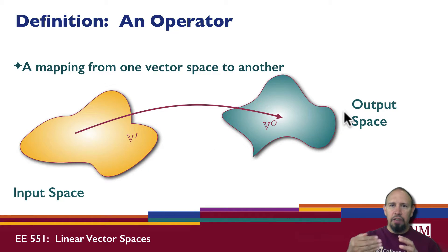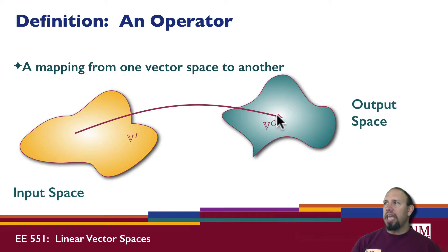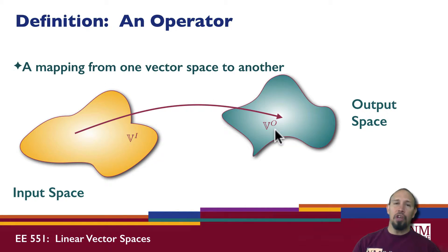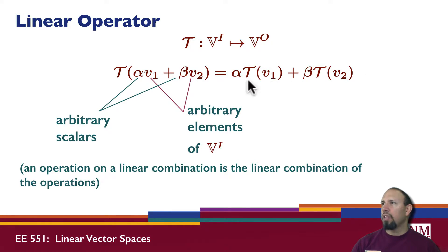If you think of a function, you have something going in and something coming out. What comes in is coming from some space, and what comes out is going to be in some space. In general, the two spaces will not be the same. So a linear operator T takes something from the input space and maps to something in the output space.